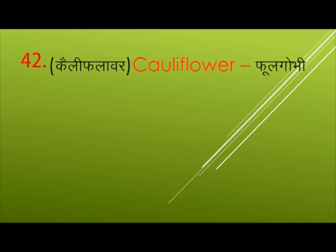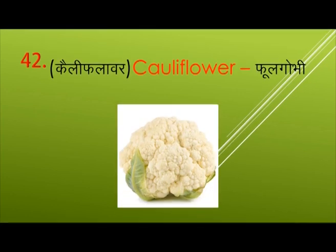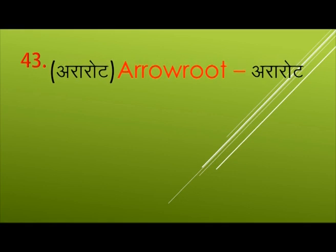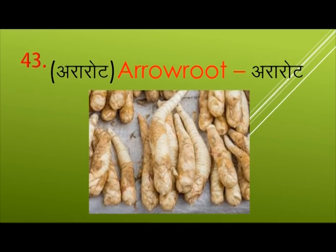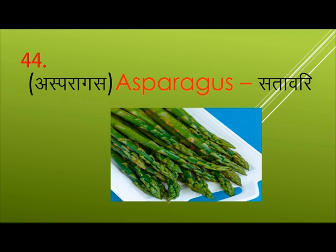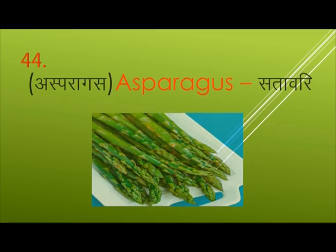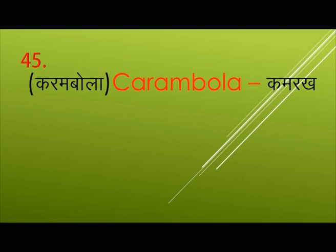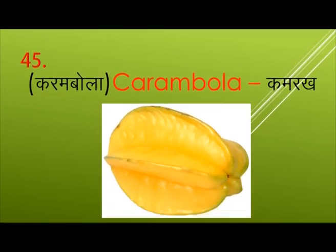Cauliflower — Phool Gobi. Arrowroot — Ararot. Asparagus — Shatavari. Carambola — Kamrakh.